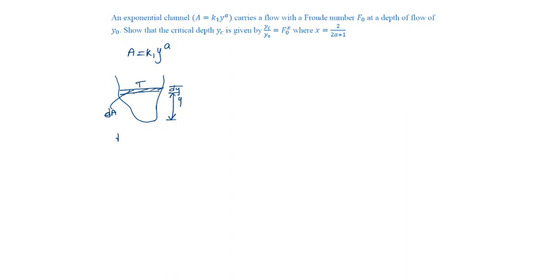The area becomes dA. dA will be, since it is like a rectangular section, T into dy. So top width will be dA by dy. Therefore, top width equal to differentiation of A with respect to y, which will be equal to A into k1 into y power a minus 1.